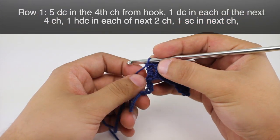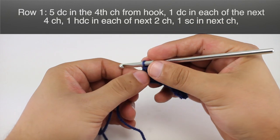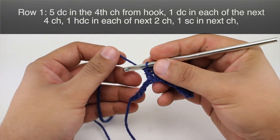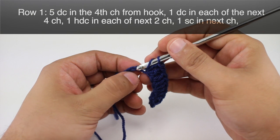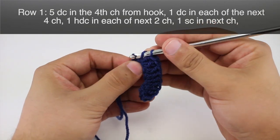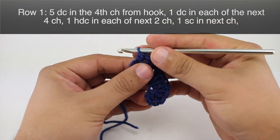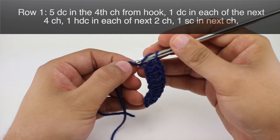Okay, now we're going to do one half double crochet in each of the next two chains. So we'll yarn over, insert our hook, yarn over and draw through all three loops on our hook. Do that again.